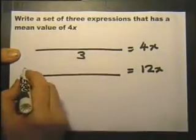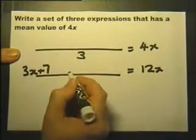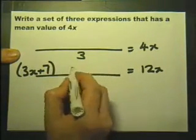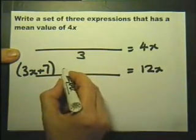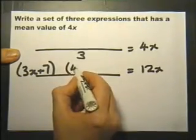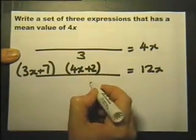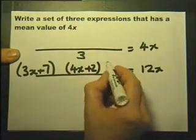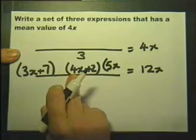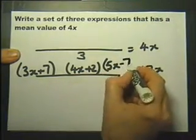So let's write down 3x plus 7. Let's make that one of the expressions. And now let's write 4x plus 2. So that will give me 7x. Now let's make the third expression 5x. Because then the 3x, the 4x and the 5x will give me the 12x. I'll make that one minus 7.